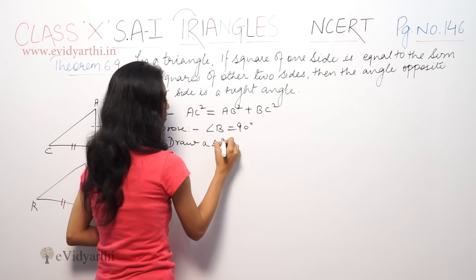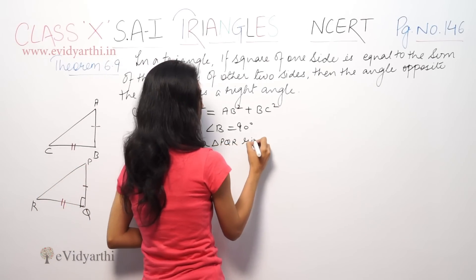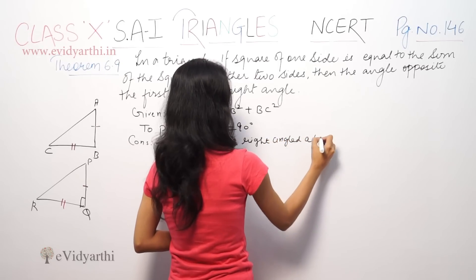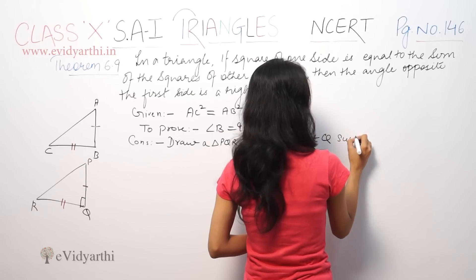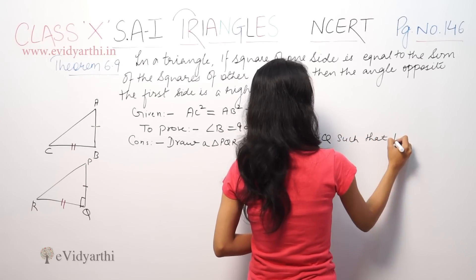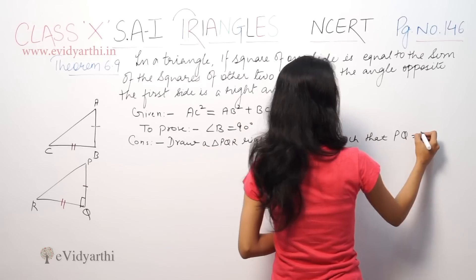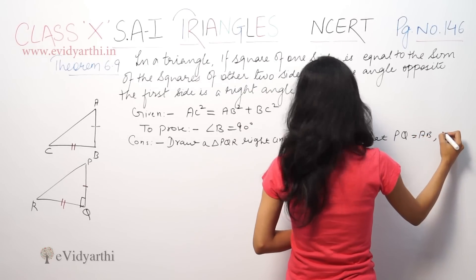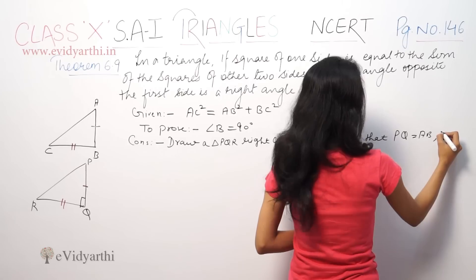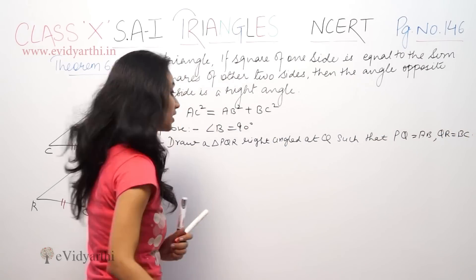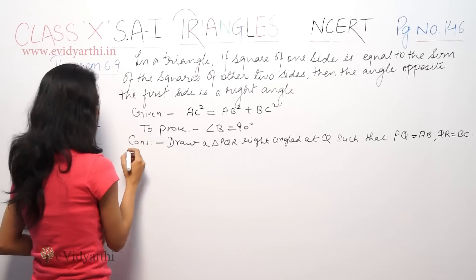Draw a triangle PQR right-angled at Q such that PQ is equal to AB and QR is equal to BC. This is our construction.